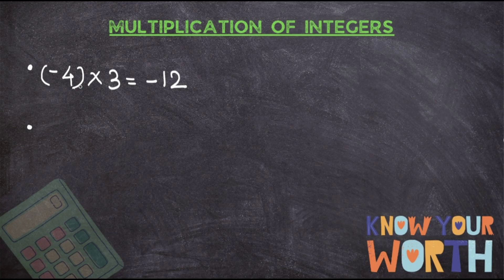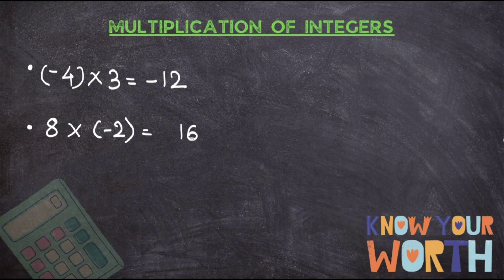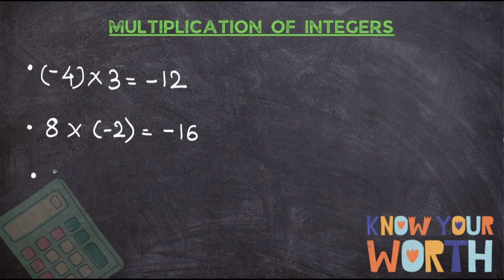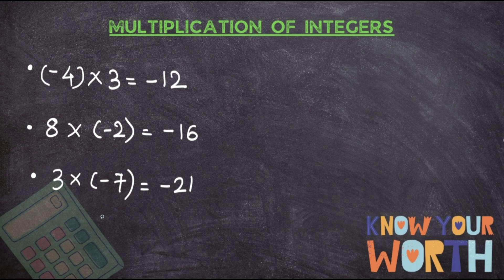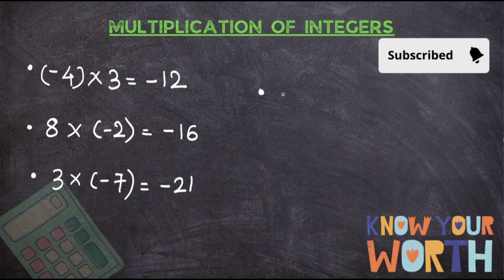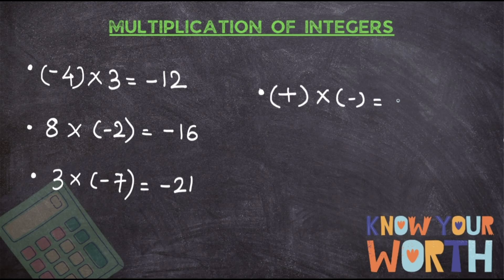Remember, the sequence doesn't matter. If I say eight into minus two — one is positive, one is negative — the rule says multiply first, but you will put the minus sign because one number is negative. Here two is negative, so the answer will also be negative irrespective of where the negative number is. Let us try: three into minus seven — positive times negative — three sevens are 21, and I put the minus sign because one is a negative number. The rule says when you multiply a positive number with a negative number, the answer will be negative.